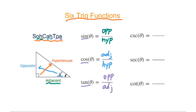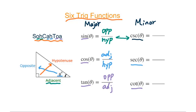Normally we call sine, cosine, and tangent the major trig functions. The other three — cosecant, secant, and cotangent — we call minor trig functions. Cosecant theta is the reciprocal of sine theta. Secant theta is the reciprocal of cosine theta. And cotangent theta is the reciprocal of tangent theta.